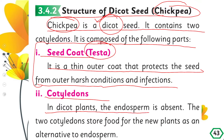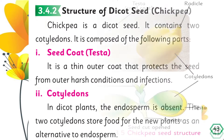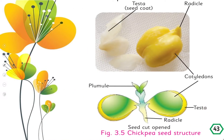In dicot plants, the endosperm is absent. The two cotyledons store food for the new plant as an alternative to endosperm. Dicot seeds have two cotyledons inside and the endosperm is absent — the food is stored in the two cotyledons. Here you can see a chickpea — safed chana — and this is its testa or seed coat.